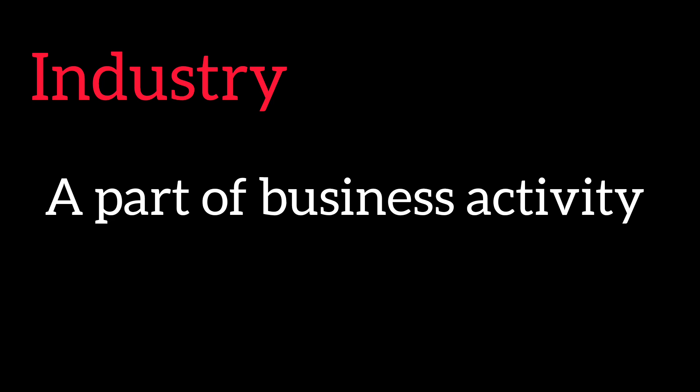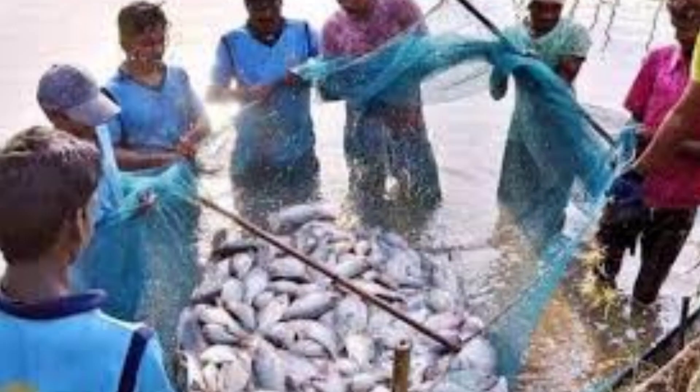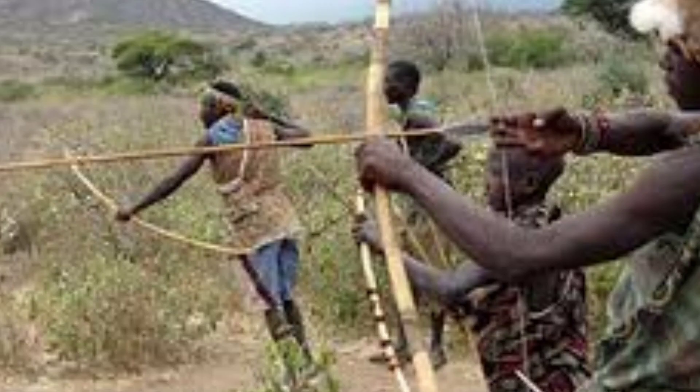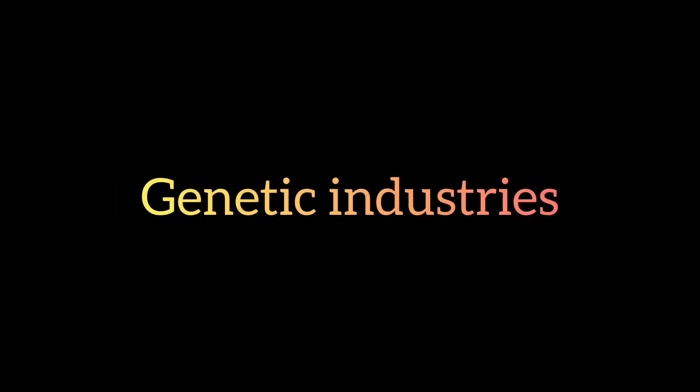Let's talk about examples of types of industry. First, extractive industries. In this industry, you can extract things from the natural world. For example: mining, fishing, agriculture, and hunting. All of these are extractive industries.